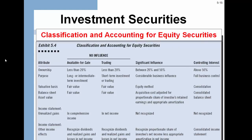For equity securities specifically, there are three key categories. The first is no influence, where you have available for sale or trading. Then you have significant influence or controlling influence, each with separate accounting. Available for sale is a long or intermediate investment reported in comprehensive income. Trading is short-term, reported in net income. The significant influence category means holding between 20% and 50% of the stock, giving considerable business influence where you can actually impact what happens. You record this using the equity method. For controlling interest greater than 50%, you perform a full consolidation.